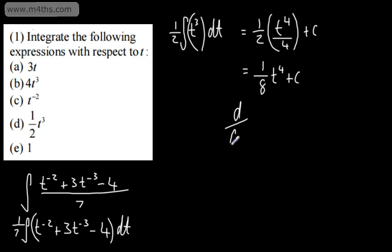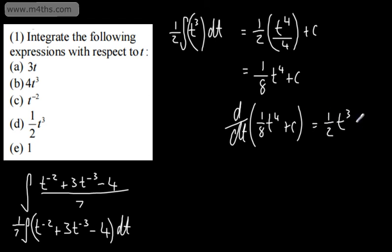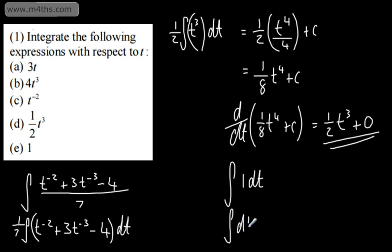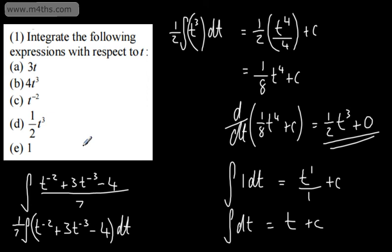The last one: the integral of 1 with respect to t. You might see this written as ∫dt — it's simply integrating 1 with respect to t. We raise by a power, divide by the new power, and add a constant of integration, giving simply t + c. If you differentiate t + c, you get 1. What differentiates to give 1 when we have the variable t? The answer is just t, because the derivative of t with respect to t is 1.